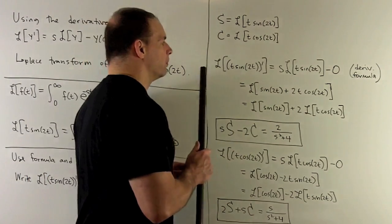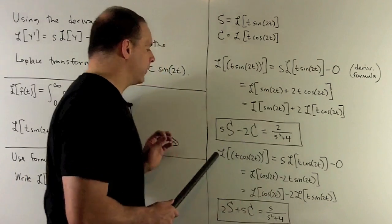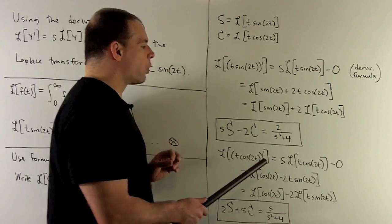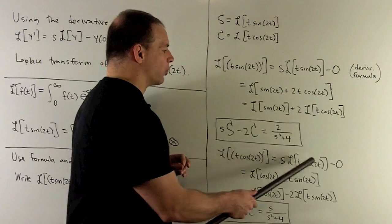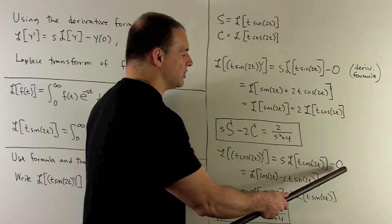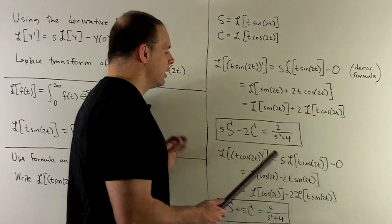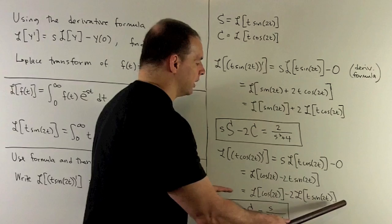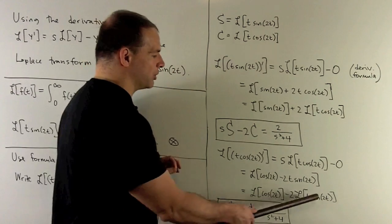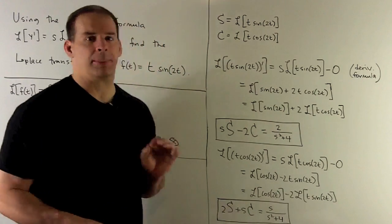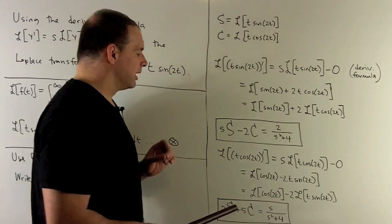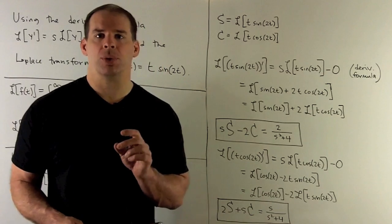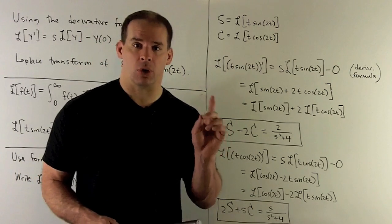Now we do the same work with the Laplace transform of the derivative of t·cos(2t). Using the derivative formula, we take away the derivative, multiply by s, and evaluate at 0, giving 0. Then using the product rule and linearity, and pushing a term to the other side, we get: 2S + s·C = L{cos(2t)} = s/(s² + 4).